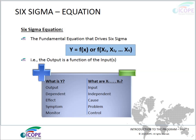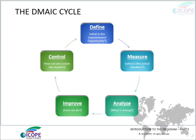In the Y = f(X) framework: the output is Y and inputs are X's; the dependent variable is Y and independents are X's; the effect is Y and causes are X's; the symptom is Y and problems are X's; and the monitor is Y while the controls are X's.